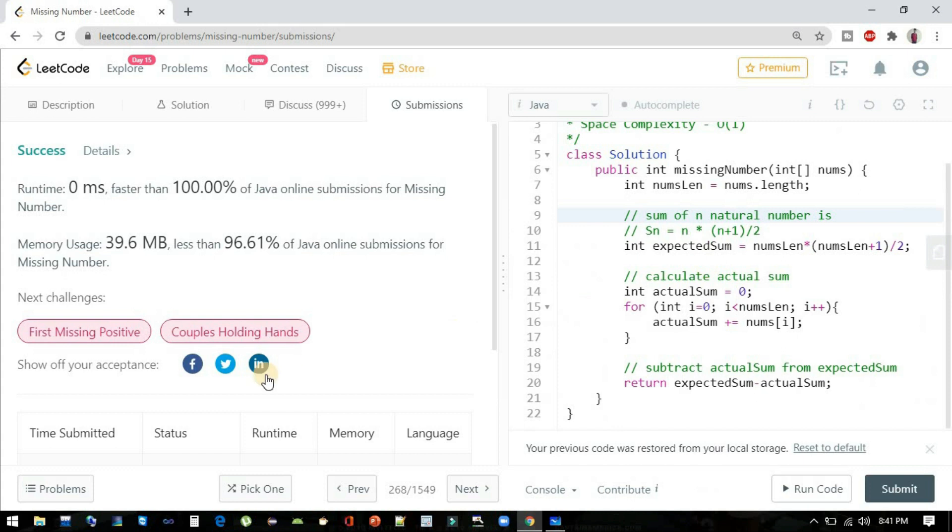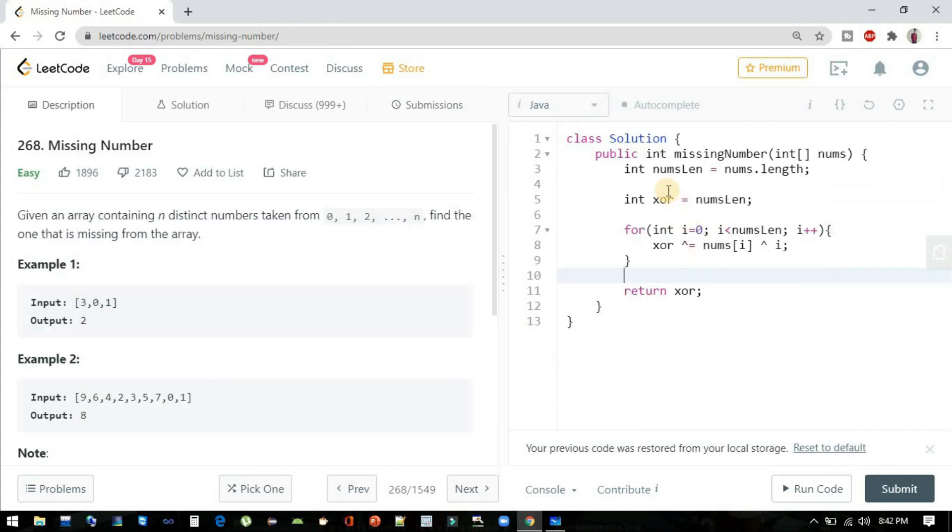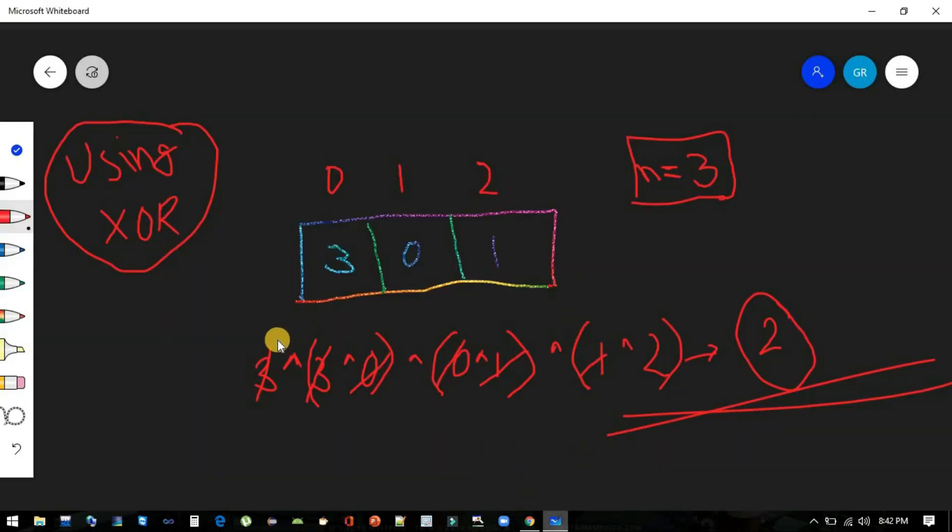So using XOR, again we have taken one variable and we have initialized with the nums.length. Now here we have taken xor as a variable and first we have initialized it with nums of i, which is n.